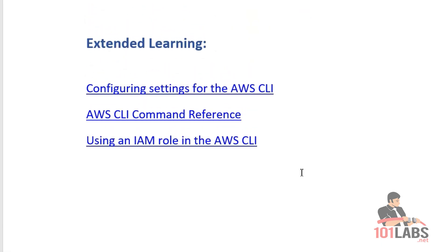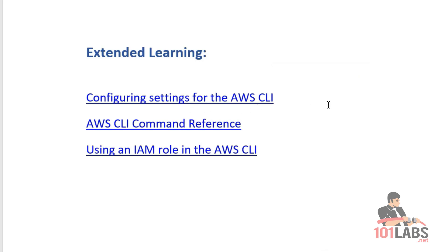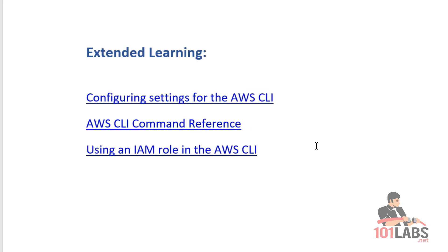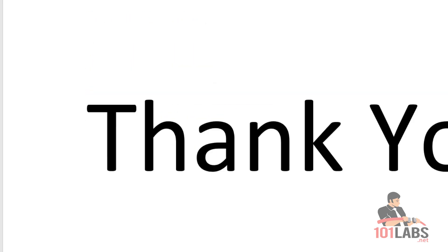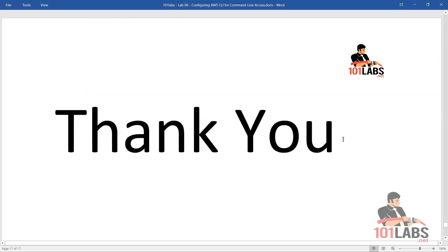And that's it for today's lab. For extended learning, you can click on this link to configure settings for the AWS CLI, or to learn more about AWS CLI command references, you can click on this link. You can also learn how to use IAM roles in the AWS CLI by clicking on this link. Thanks so much for watching, I hope you liked it, and I'll see you next time.